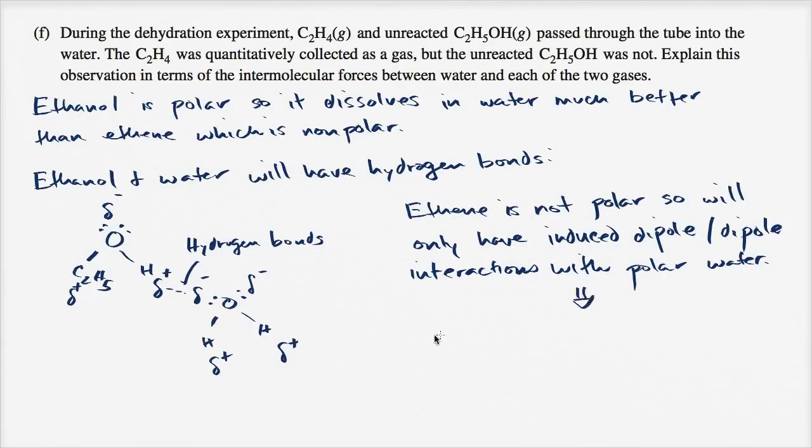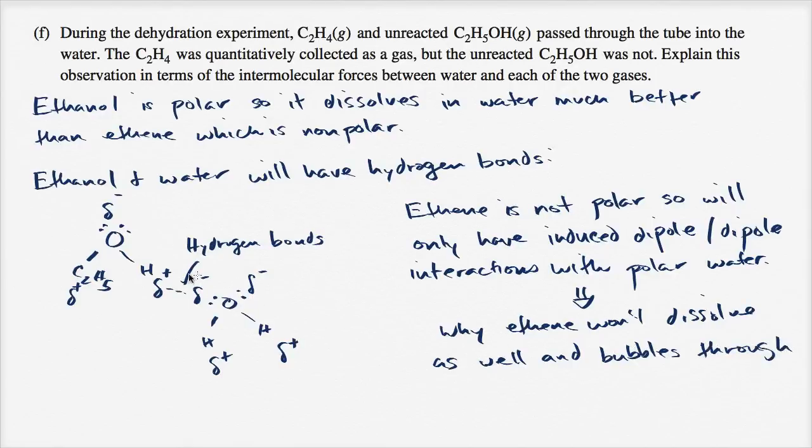This is why ethene won't dissolve as well and bubbles through. Ethanol dissolves, ethene bubbles through, because it doesn't have strong interactions with the water.